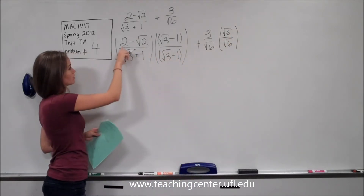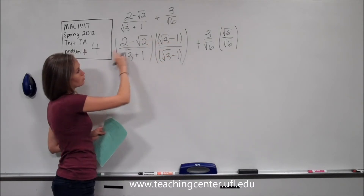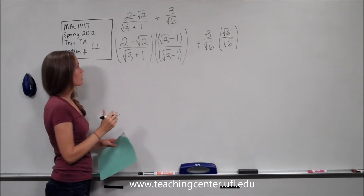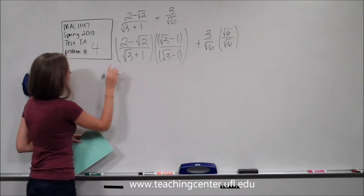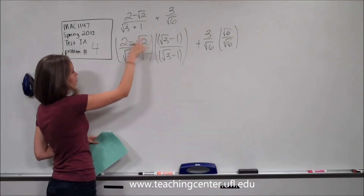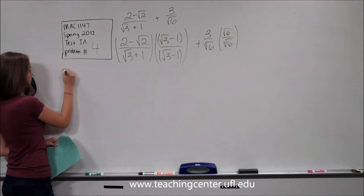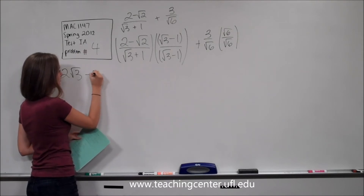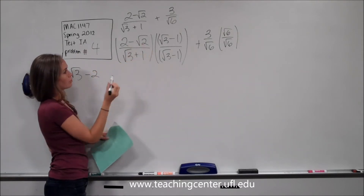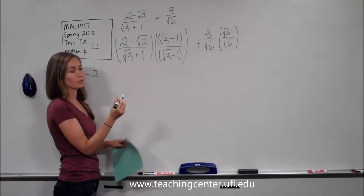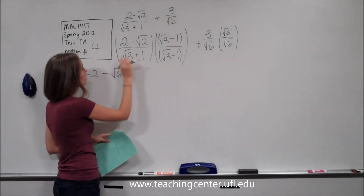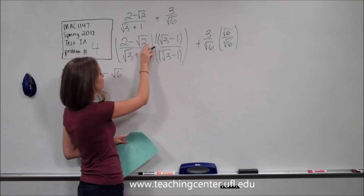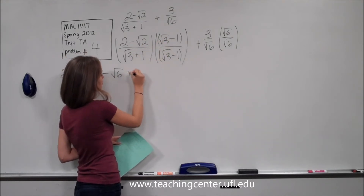Now we just need to go through and FOIL across the numerator and then across the denominator, because we're just multiplying these two together. So it's going to be: First — 2 times root 3. Outside — 2 times negative 1, so minus 2. Inside — negative root 2 times root 3, which turns into negative root 6. Last — negative root 2 times negative 1, which turns into positive root 2.